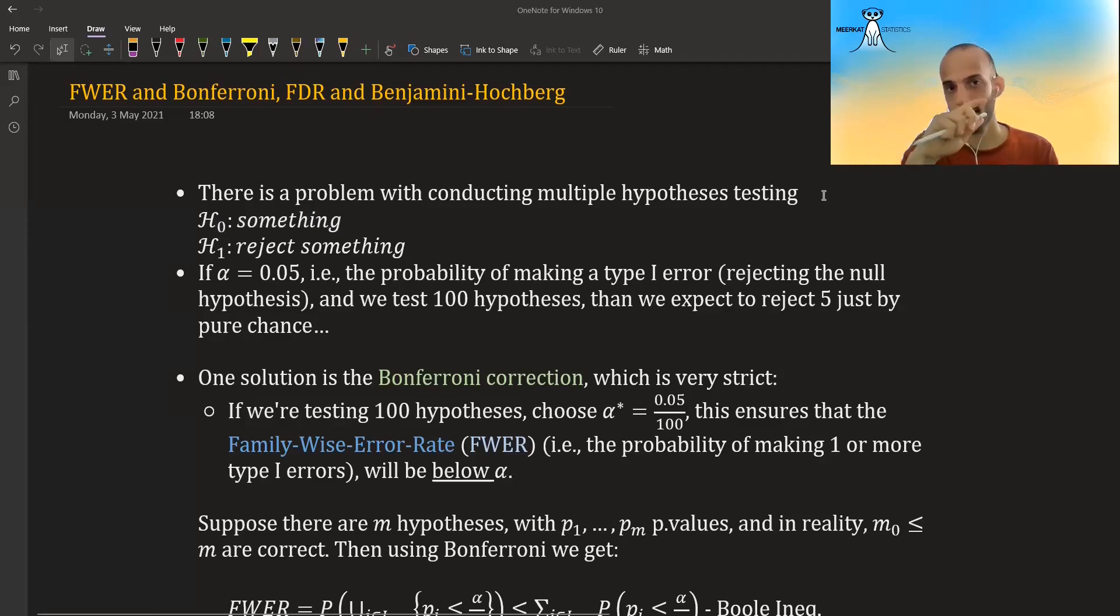Hello guys. In this video I'm going to talk about the family-wise error rate, the Bonferroni correction, the false discovery rate, and the Benjamini-Hochberg procedure to controlling the false discovery rate.